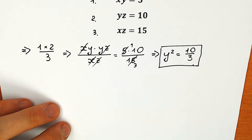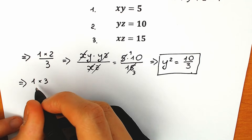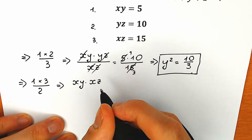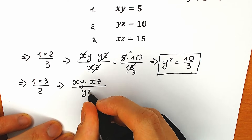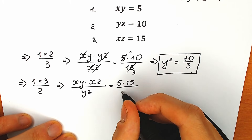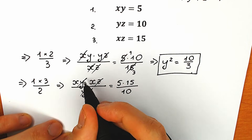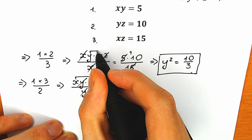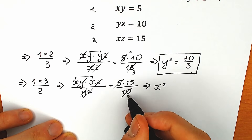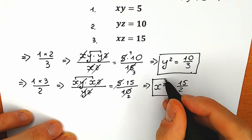Now the second combination: let's multiply the first equation by the third and divide by the second. So xy times xz all over yz equals 5 times 15 over 10. On the left side, we cancel y and y, z and z, leaving x squared. On the right side, 5 and 10 cancel to give 15 over 2. So x squared equals 15/2.